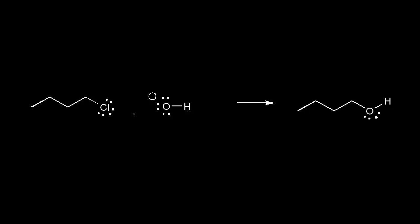For this reaction, let's look at this alkyl halide on the left. We know that chlorine is more electronegative than this carbon, so the chlorine is going to withdraw some electron density away from that carbon, which makes it partially positive. Since this carbon is partially positive, this is the electrophilic center of this compound.